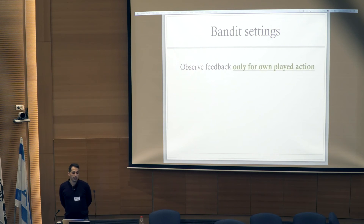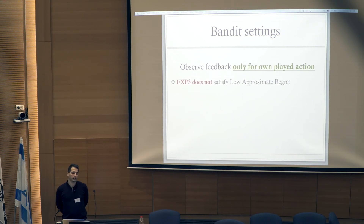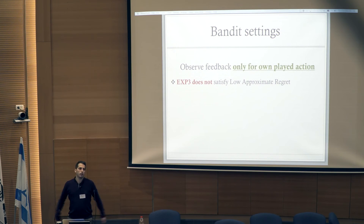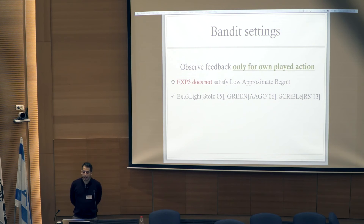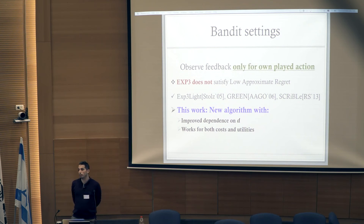In bandit settings, players only observe feedback for the strategy they actually played, rather than full information. Unlike the full information case where multiplicative weights satisfies the low approximate regret property, the main adversarial bandit algorithm EXP3 does not, mainly because its regularizer is not strong enough to guarantee sufficient exploration. However, many other algorithms do satisfy the property, and we introduce a new algorithm with improved dependence on the number of strategies that works for both costs and utilities.